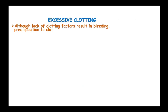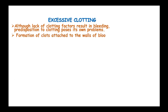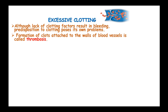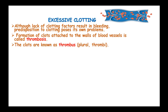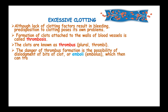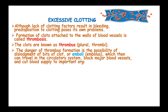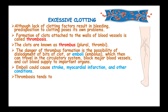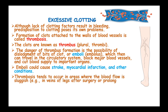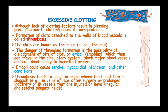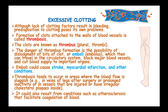Although lack of clotting factors results in bleeding, excessive clotting presents its own problems. Formation of clots attached to the walls of blood vessels is called thrombosis, and the clots are known as thrombus or thrombi. The danger of thrombus formation is the possibility of dislodgement of bits of clots, called emboli, which can then travel through the circulatory system, blocking blood vessels and cutting blood supply to important organs. Emboli can also cause stroke, myocardial infarction, and other conditions. Thrombosis tends to occur in areas where blood flow is sluggish, such as the veins of the legs after surgery, prolonged inactivity, or in vessels that are injured or have irregular cholesterol plaques inside. It can also start from conditions such as arteriosclerosis, which facilitates coagulation of the blood.